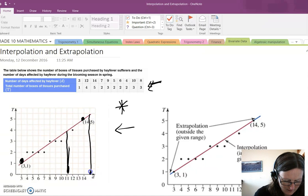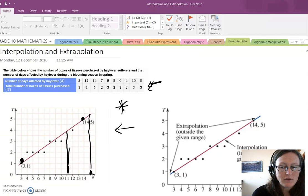We're asked to predict the number of boxes of tissues for 15 days. 15 falls above the highest value, so that's an example of extrapolation. Extrapolation occurs when the value of the variable being predicted is outside the range of the given data.